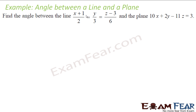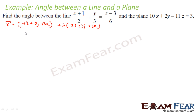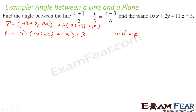The equation of the line that passes through (−1, 0, 3) is: r = (−i + 0j + 3k) + λ(2i + 3j + 6k). This is the equation of the line. And for this plane, I can write r·(10i + 2j − 11k) = 3. So this is r·n = d, and the line is a + λb.